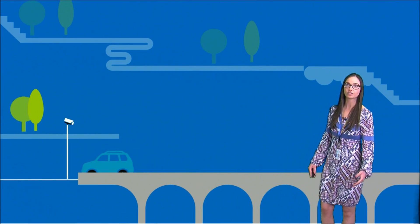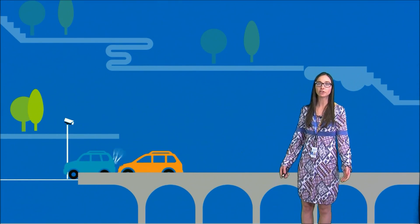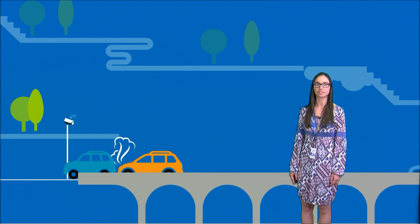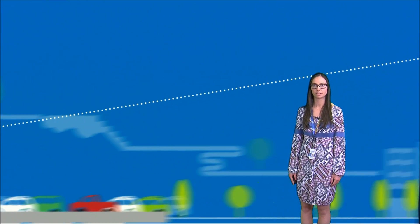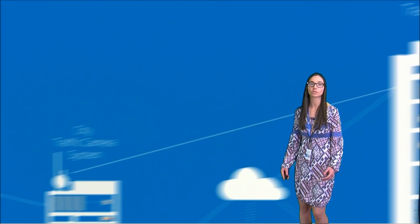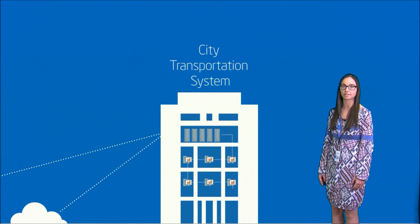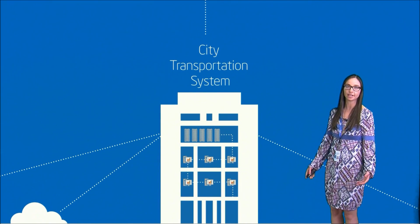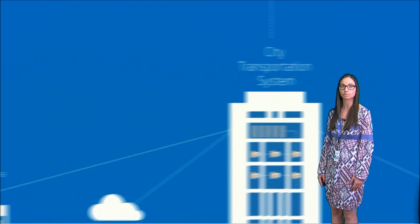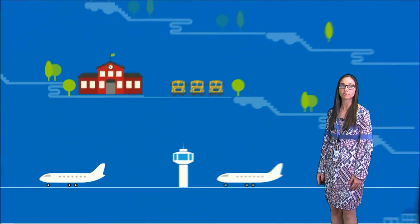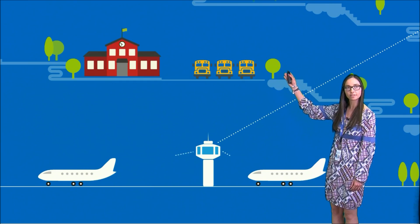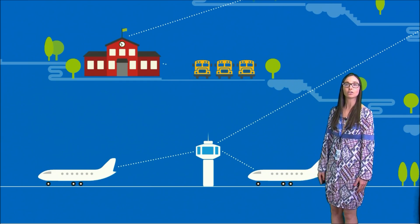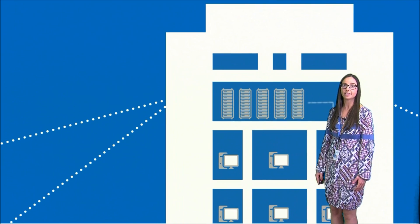Now imagine there is an accident on the road. A camera notices it and sends out the data to the city transportation system. This would have an impact on other systems and inform about the delay in public transportation, for example at airports or even at schools.